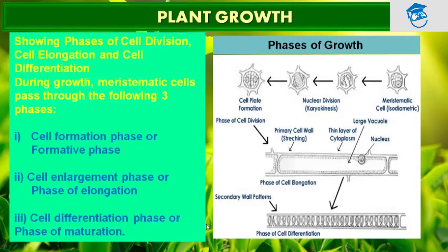Let us understand this by looking at a root tip diagram shown in the PPT. During growth, meristematic cells pass through the following three phases: first, the formative phase where cell formation takes place; second, the cell enlargement phase, also called the phase of elongation, where the cell elongates by stretching; and then the cell differentiation phase, or phase of maturation, in which the cell gets matured.